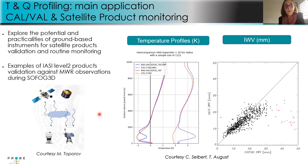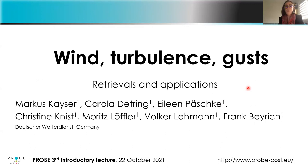If you are in the satellite community, these ground-based measurements and products can be used for Level 2 satellite data monitoring or calibration/validation activities. This is an example of intercomparing IASI temperature profiles and integrated water vapor profiles. Thanks for your attention — I will now hand over to the next presentation about wind, turbulence, and gust products.